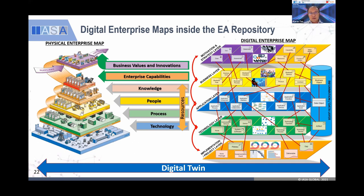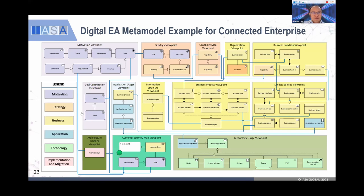An example of the metamodel: we divide the enterprise into multiple layers — motivation, strategy, business, application, technology, and implementation and migration. We need to know what elements are impacted and what information we need to capture. The metamodel is like a database — all this information and elements defined in ArchiMate are like database tables where you can store information, intelligence, and attributes. Then later you can populate that into a dashboard and show the relationships. What Gartner predicted is they have seen up to that level.